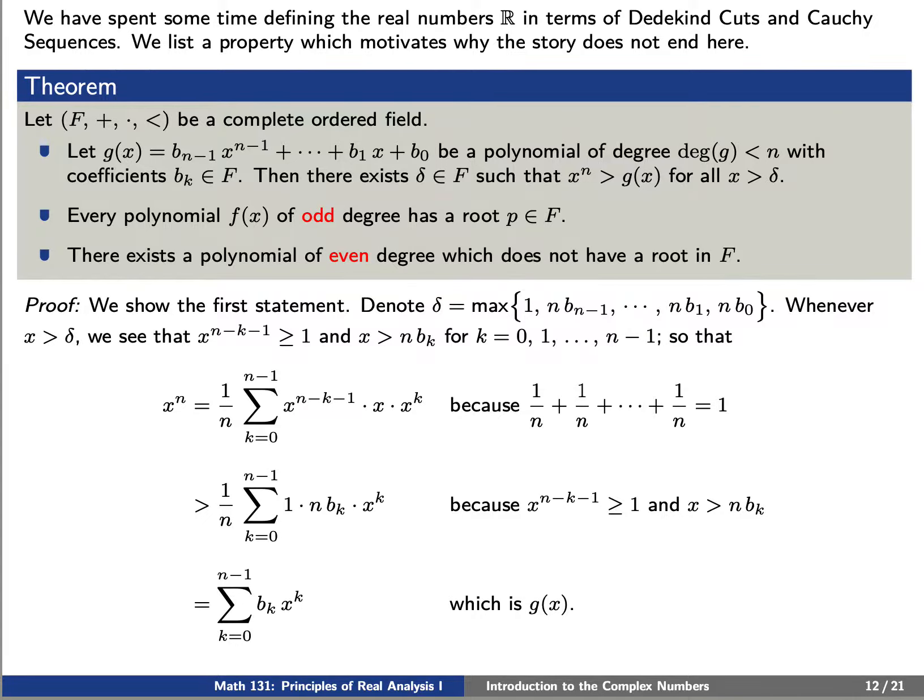If we sum this element n times and then divide by n, we just recover x to the n. But now, x to the n minus k minus 1 is greater than 1 and x is greater than n times b sub k, so we find a sum of n times b sub k times x to the k. Remember that we were dividing by n to begin with, so if we divide by this n and multiply it, they cancel and our sum just becomes the original polynomial g of x.